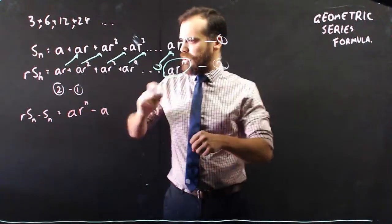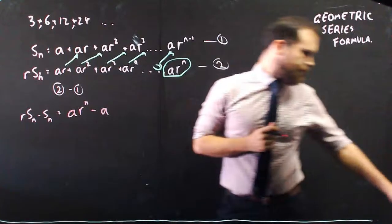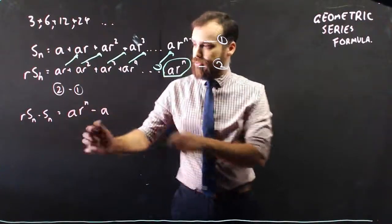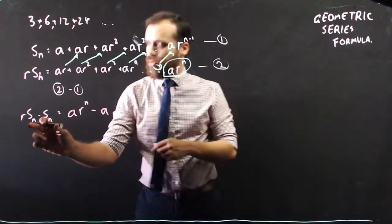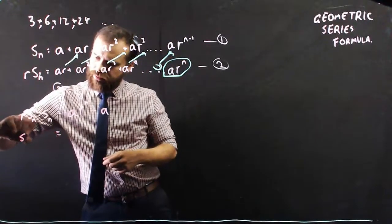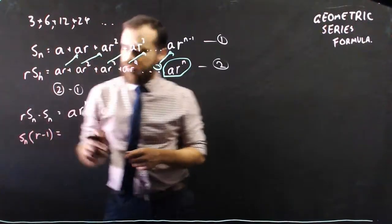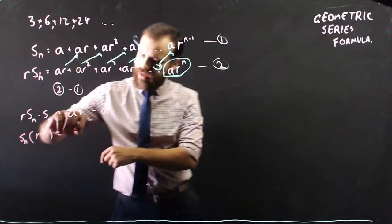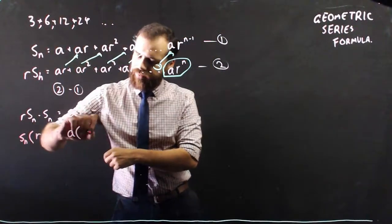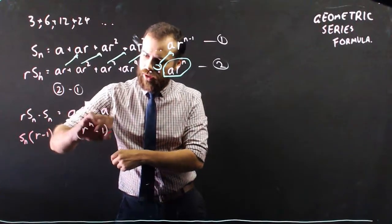Now, what can I do here? I can factorize both left and right, because this has a common factor of the sum of n, and I get r minus 1 here, and this has a common factor of a, and I'll get r^n minus 1.